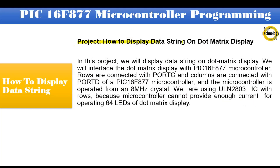Project: how to display a data string on a dot matrix display. In this project we will display a data string on a dot matrix display. We will interface the dot matrix display with a PIC16F877 microcontroller. Rows are connected with Port C and columns are connected with Port D. The microcontroller is operated from an 8 MHz crystal. We are using ULN2803 IC with the rows because the microcontroller cannot provide enough current for operating 64 LEDs of the dot matrix display.